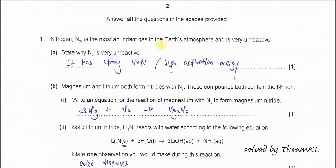Nitrogen is the most abundant gas in the earth's atmosphere and is very unreactive. State why N2 is very unreactive. Just one reason because the N-N triple bond is very strong. It needs a lot of energy to break it or you can say that it has a high activation energy.